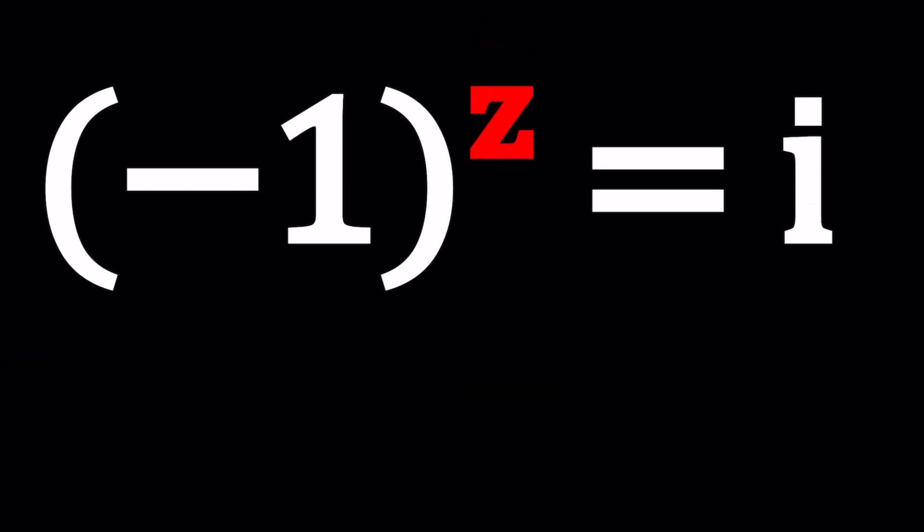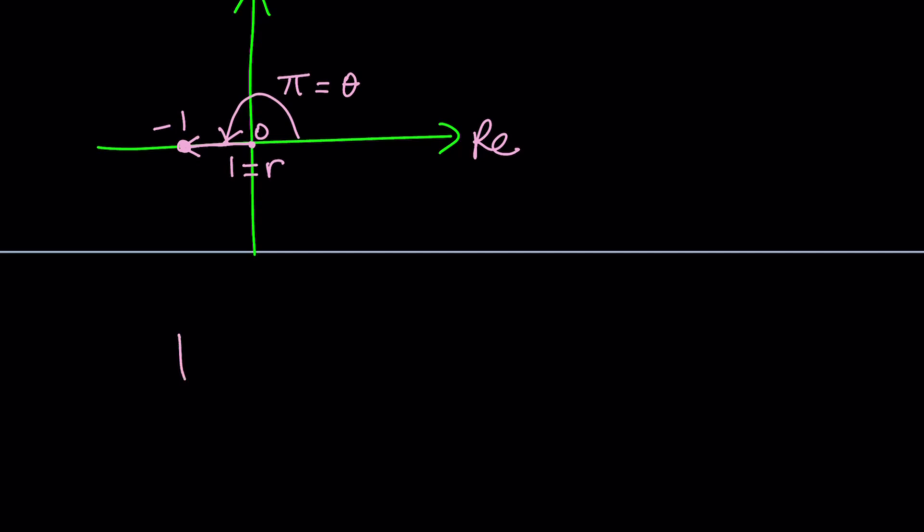So let's go ahead and write each of these in polar form. Thanks to Euler, we can convert these. So negative 1 on the complex plane or the argand plane, it's going to be on the real axis because it is a real number and its distance from 0 is going to be 1 unit, its absolute value. And it's going to make an angle of 180 degrees or pi radians. Because pi is going to be the argument of this number, which we can call theta. And 1, the distance from 0, is going to be the modulus. And you can write any complex number as r times e to the i theta, where theta is the argument and r is the modulus.